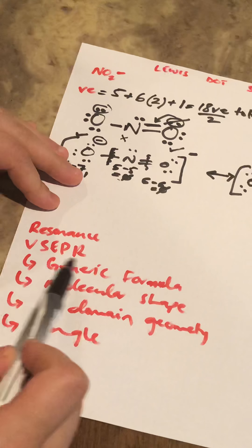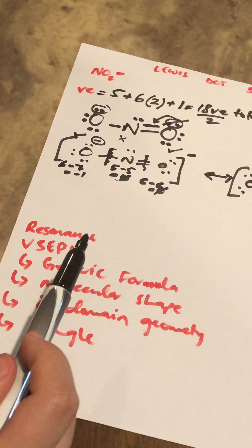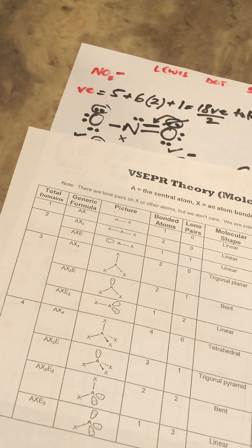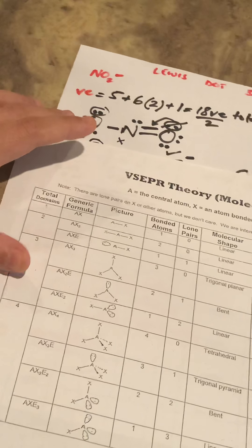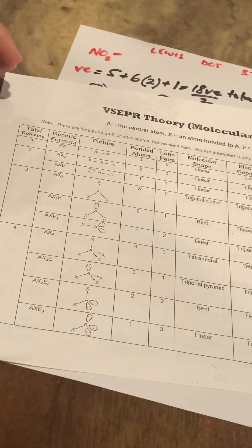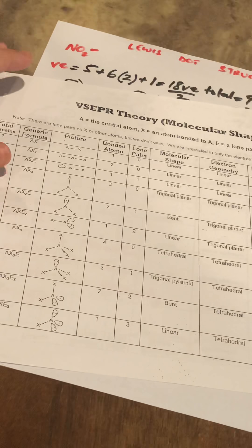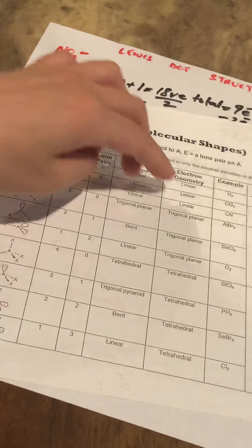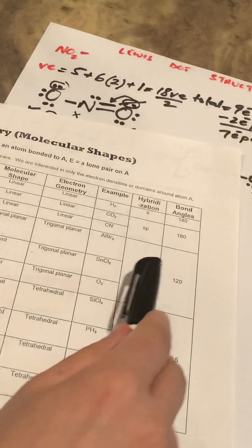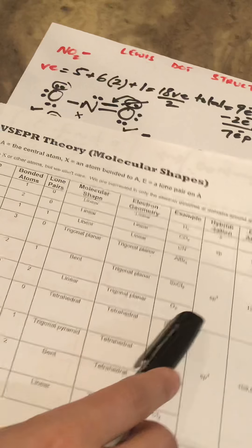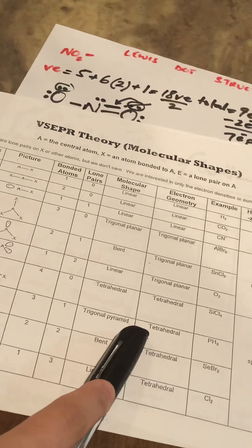Now let's cover VSEPR theory, which tells us the accurate three-dimensional shape of a molecule. VSEPR says bonds and atoms must be arranged to minimize repulsion. A reference table is available on the chemistry webpage, and you should memorize it — it will not be provided on the final exam. The two most important columns are the molecular shape and the electron domain geometry.